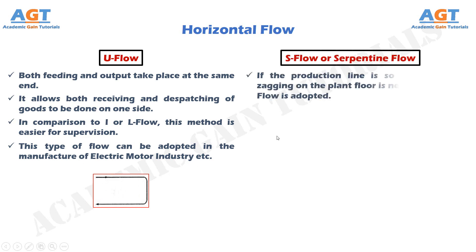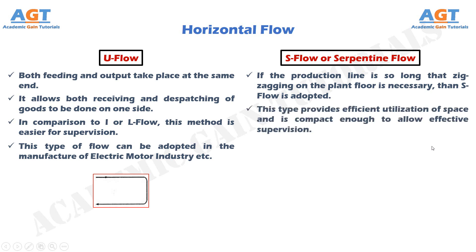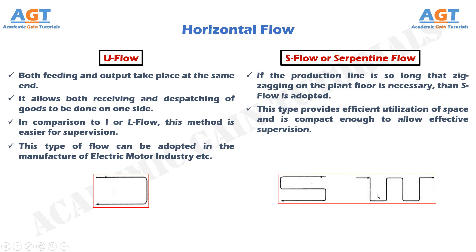Number 4: S flow. This material flow pattern is also known as serpentine flow or inverted S flow. If the production line is so long that zigzagging on the plant floor is necessary, then S flow is adopted. This type provides sufficient utilization of space and is compact enough to allow effective supervision. Both figures represent S flow, or serpentine flow, or inverted S flow.